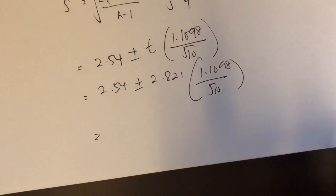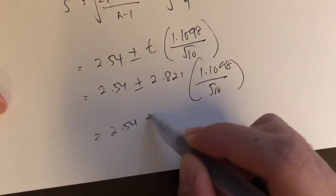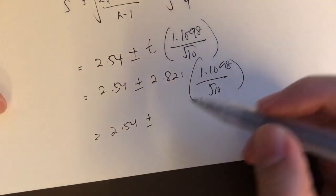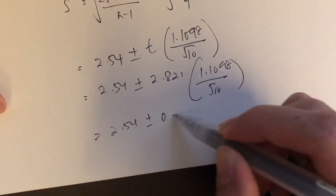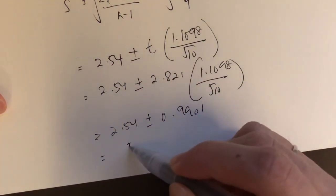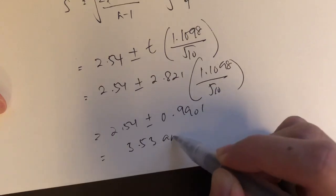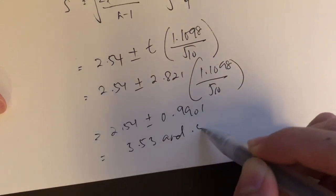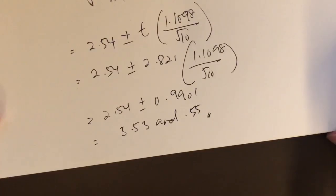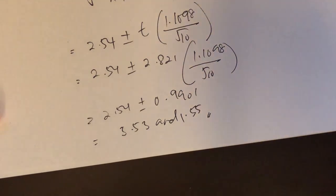The answer is 2.54 plus or minus 0.9901. So the 98% confidence interval is between 1.55 and 3.53.